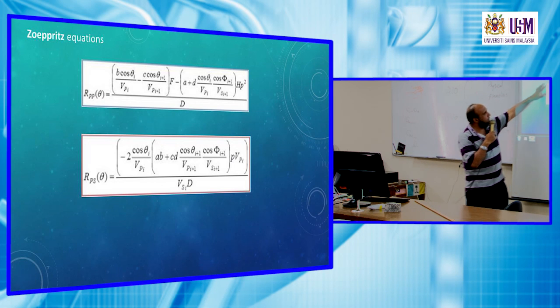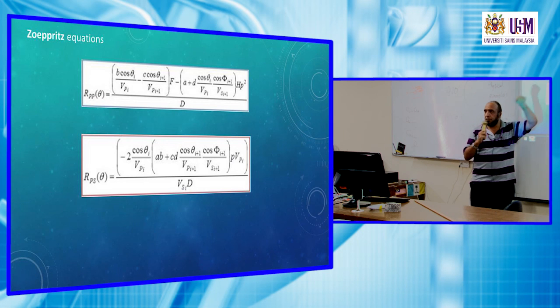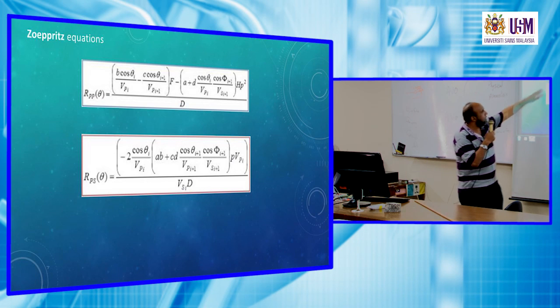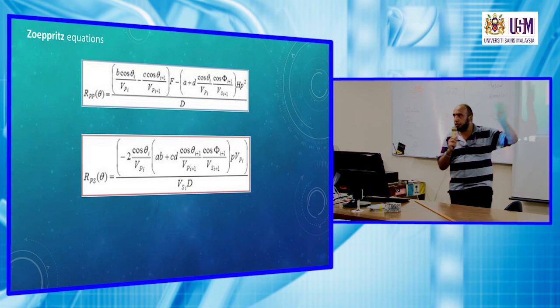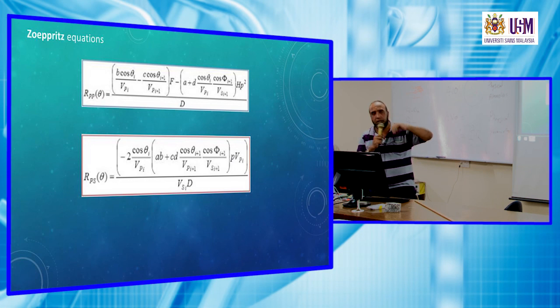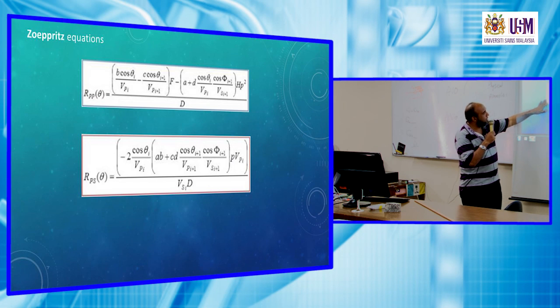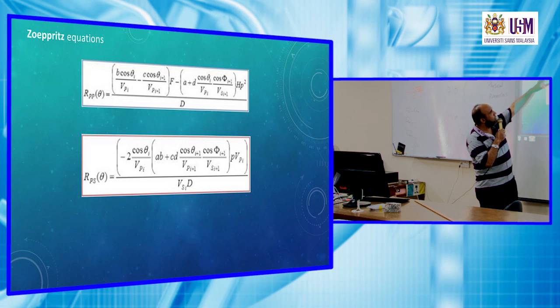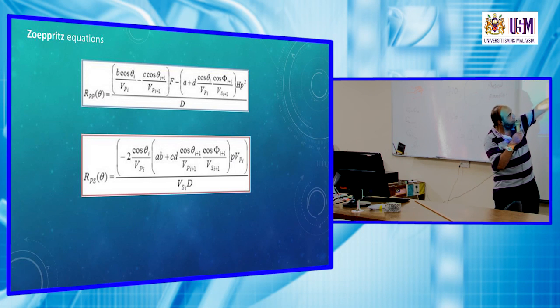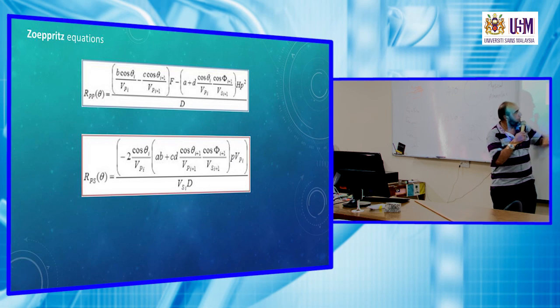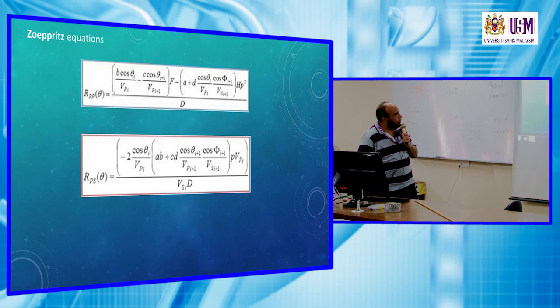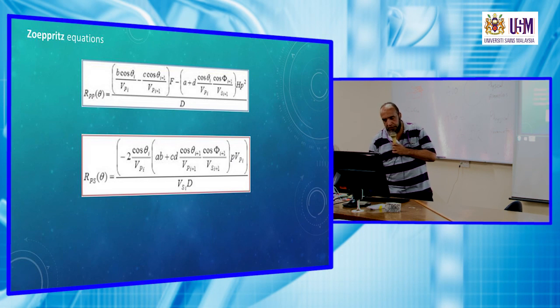Then we have Zoeppritz's equation. This equation is used to determine the reflection coefficient for the incident P wave and reflected P wave, and we designate it here by RPP. And also the reflection coefficient for incident P wave reflected as shear wave or S wave RPS as a function of angle of incidence theta. So, we have these two relations. We have constants like B and C, AD and F, H B square. And here we have also A, B, C, D and V. This constant will be minimized and simplified in the forthcoming slides to provide the final model that relates this one.